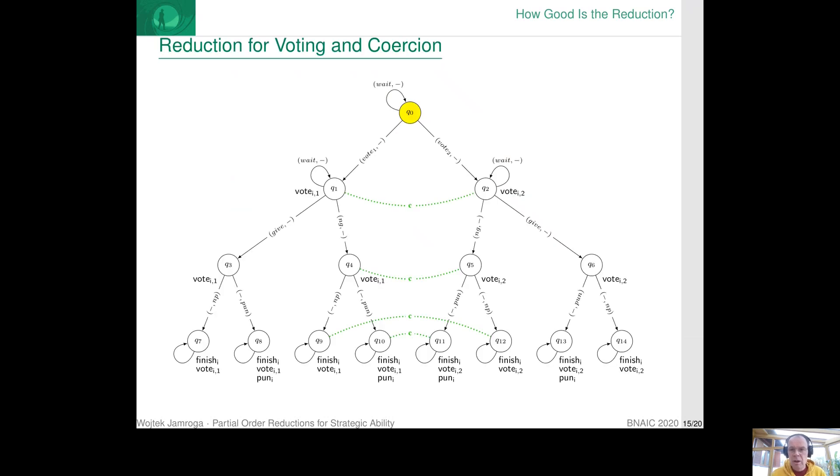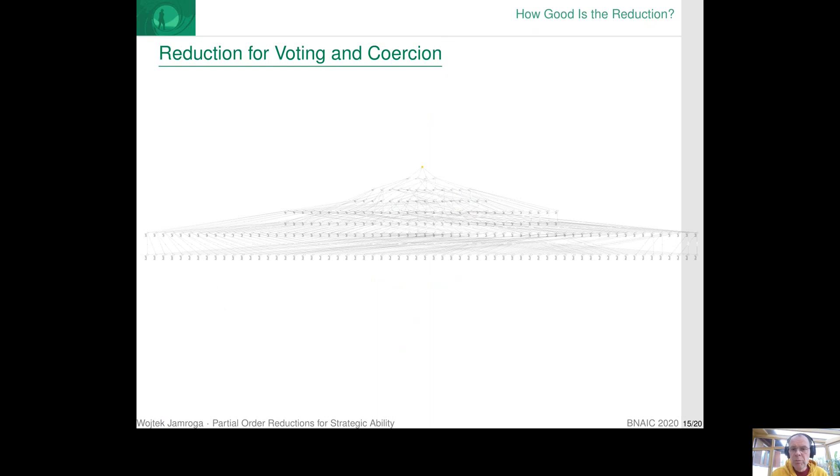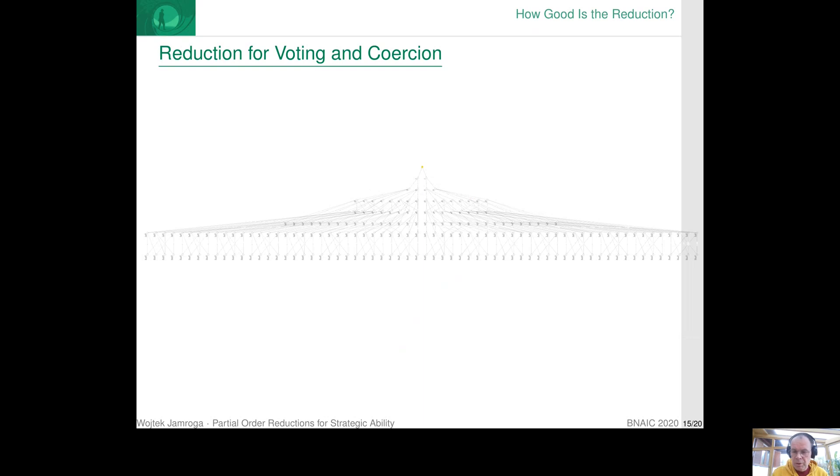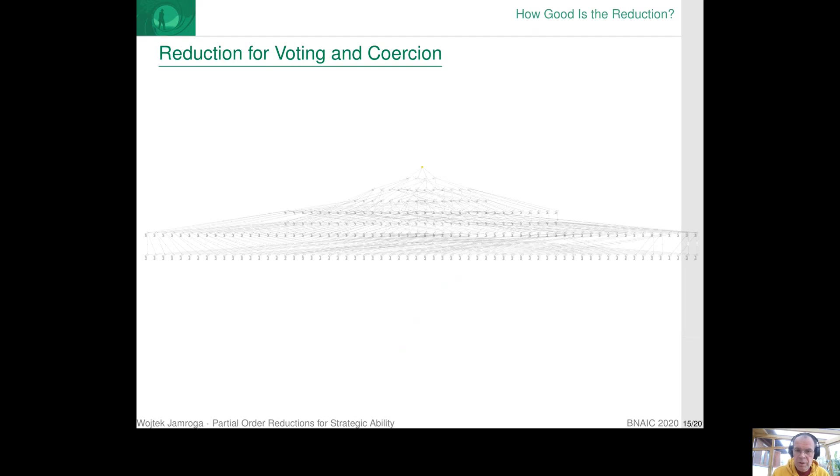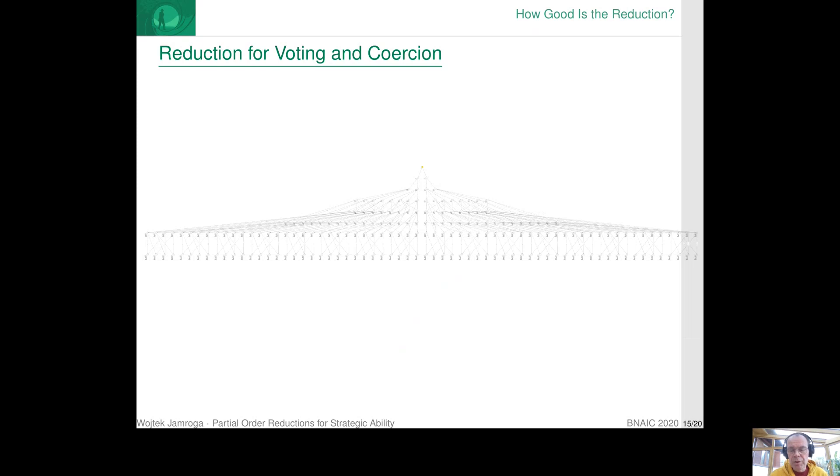To give you an idea how good the reduction is, let's go back to the example of the voter and the coercer. So, as I showed you, this is the model for just one voter. This is the full model for two voters and one coercer. And this is the reduced model. So it is easy to see that many states and even more of the transitions disappear in the reduced model.